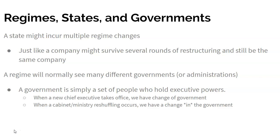This is very similar to a company that might survive several rounds of restructuring but still be the same company. A regime will normally see many different governments. A government or administration is just a set of people who hold executive power. So since the United States Constitution was ratified in 1791, we've had 45 presidents, each with one or more administrations. Although the regime hasn't really changed because the Constitution hasn't changed that much, we can still talk about different governments occupying positions within a given more or less stable set of rules for selecting office holders.